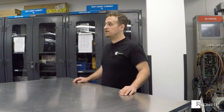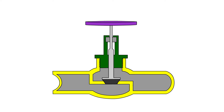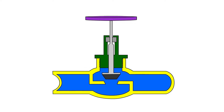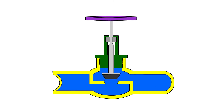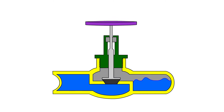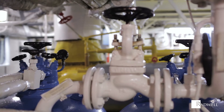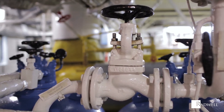A globe valve is a bit more advanced. It has the ability to stop, start, and regulate the amount of fluid flow. Like gate valves, globe valves operate by turning a hand wheel. This operation will raise or lower a cone-shaped plug out of the fluid flow pathway. The flow is controlled by how far away the plug is from the seat.